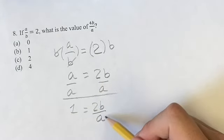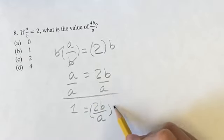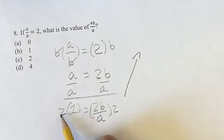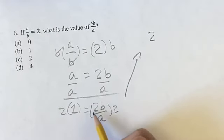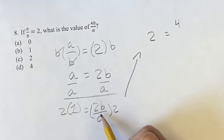Okay, so we have b over a which is good, but we need to get it to 4, so we multiply this by 2, and you have to multiply both sides to keep it even. We're left with 2 times 1 is 2, is equal to 2 times 2 is 4b over a.